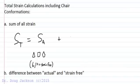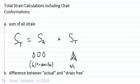We also have torsional strain, which is due to eclipsing interactions — as seen in Newman projections — where dihedral angles are non-ideal, specifically less than 60 degrees, where we have overlapping eclipsing. That is torsional strain.